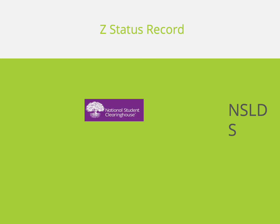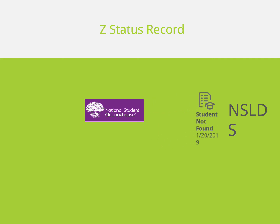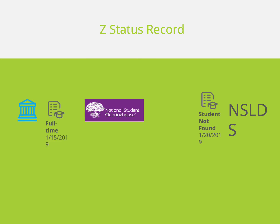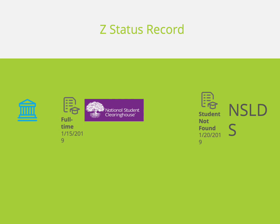Our last scenario for Error Code 32 is Z status records, and these typically only occur at the beginning of a new term. Error 32s come up for this reason when NSLDS includes a new student on a school's roster prior to when the school reported the student to the clearinghouse. Since the student is not in the clearinghouse system, a Z status for student not found is reported to NSLDS.